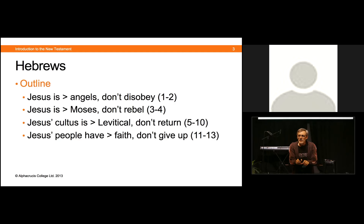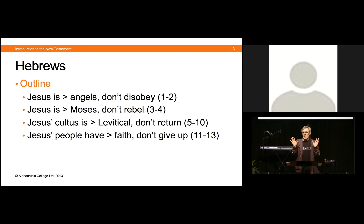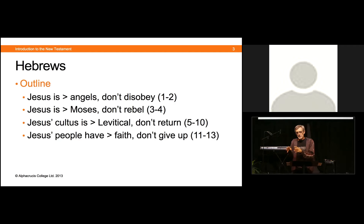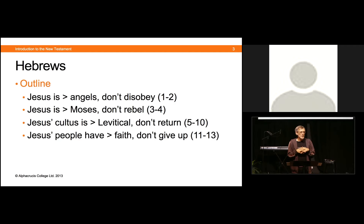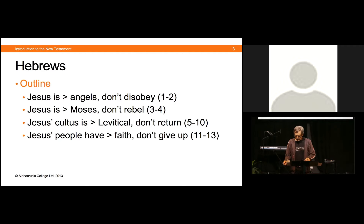So the argument continues: Jesus and the angels. The law was given through angels to Moses, who gave it to the people. Disobeying that law was punishable by death. Now the message we have came not through an angel but through the Son of the Lord himself. Jesus is more important than an angel, so if disobeying an angel got you into trouble, disobeying Jesus will get you into even bigger trouble.